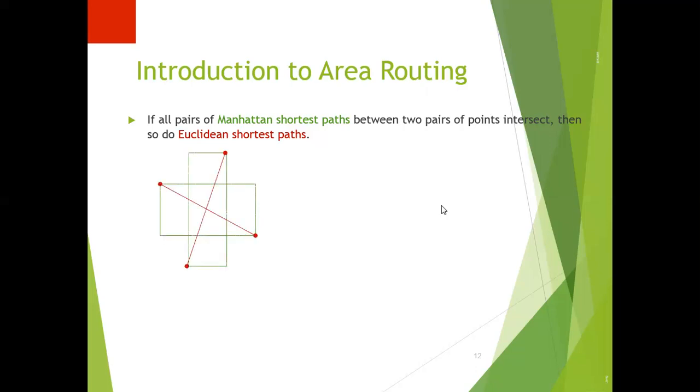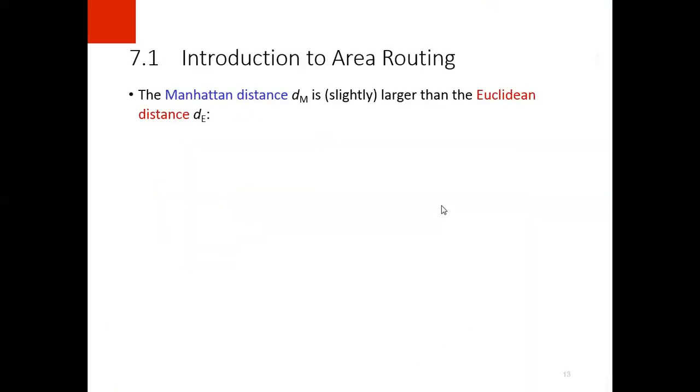In this example also, if all pairs of Manhattan shortest paths between two pairs of points intersect, then Euclidean paths will also intersect.